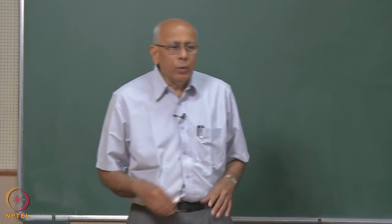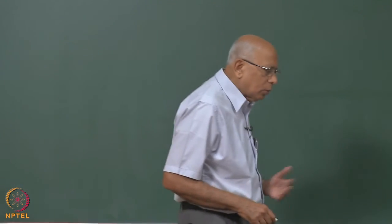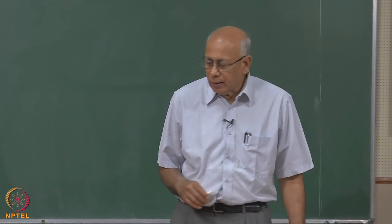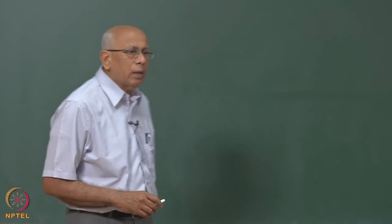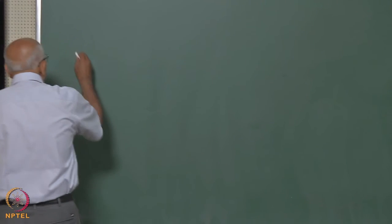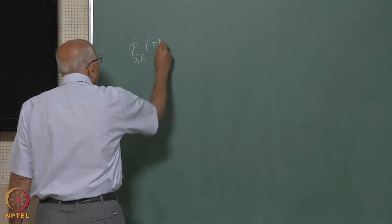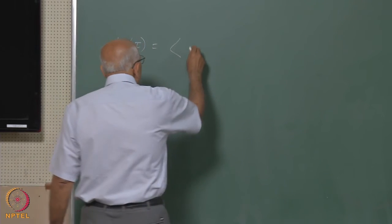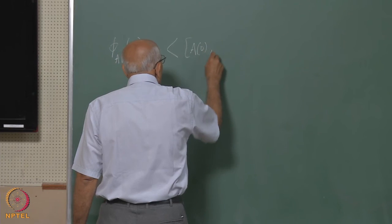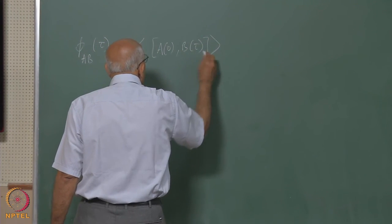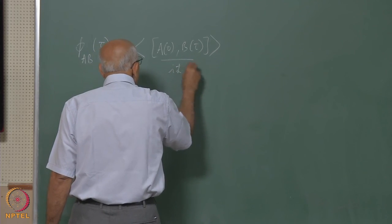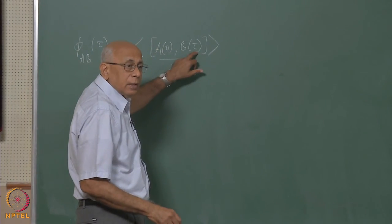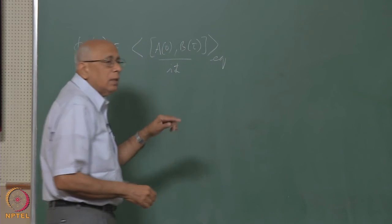Let us start by reviewing a few of the key formulas we had derived before the break. These had to do with the way the spectral function enters in linear response theory. We have a response function φ_AB(τ), which is the equilibrium expectation value — writing the quantum case — equal to the commutator of A(0) with B(τ) over iℏ. This immediately led us to a formula for the equilibrium expectation value of the commutator itself in terms of the spectral function.